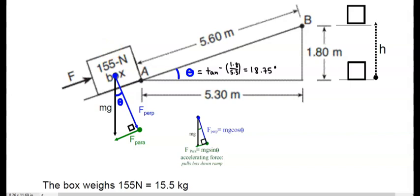Now you want to move this box from point A to point B. The baseline of A all the way up to point B is a 1.8 meter height, and of course the distance from A to B along the incline is 5.6 meters, and the base of this triangle is 5.3 meters.